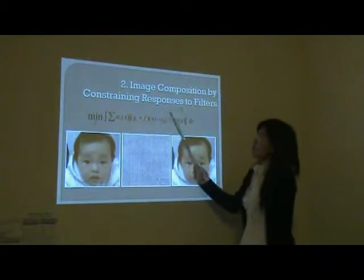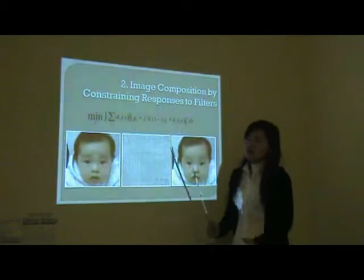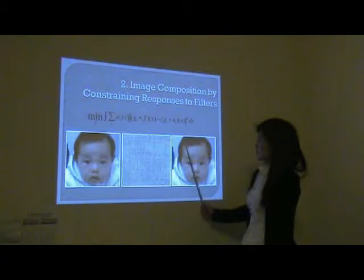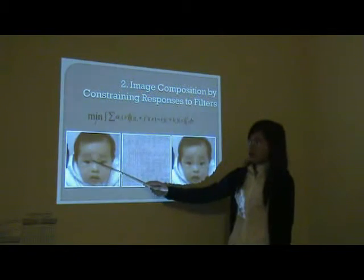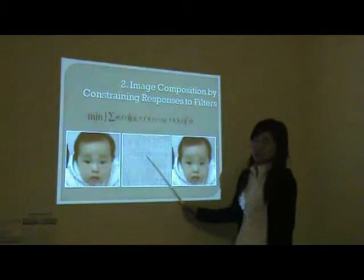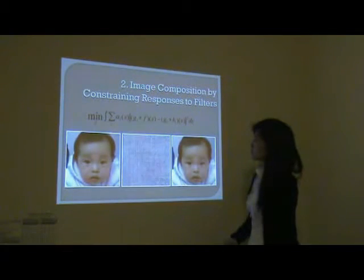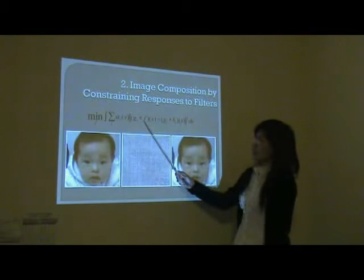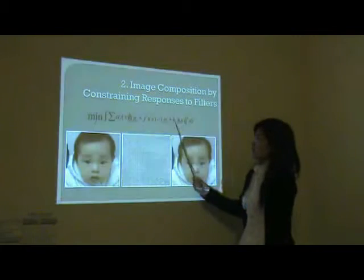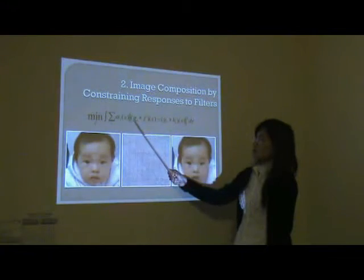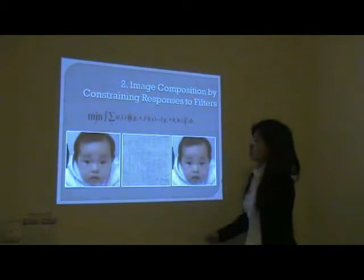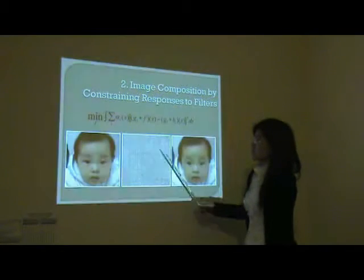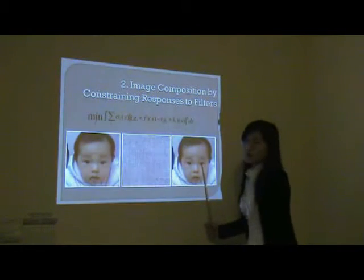Second, image composition by constraining responses to filters. It provides a uniform framework for a variety of image composition types. For example, we want to achieve an objective image with the same object in the first picture and similar texture in the second image. We can constrain it through a minimization equation. F is the objective image, H is the first picture. We require them to have the same response after filtering by gradient operators. Similarly, texture can be constrained with Gabor filters. Then we weight them to achieve the optimal result and get the objective image with texture transfer.